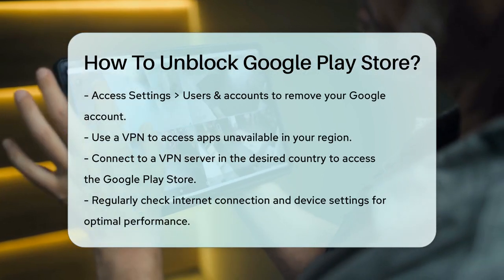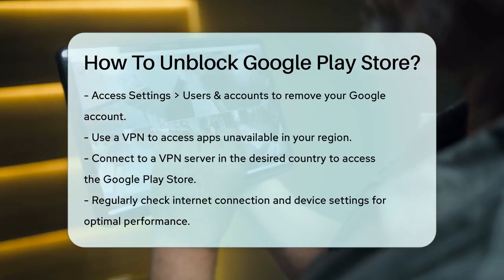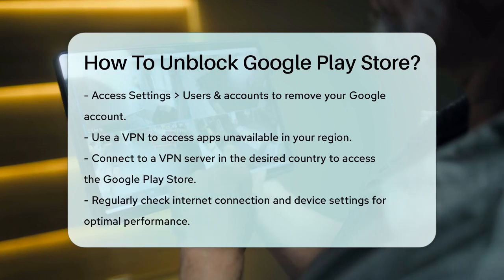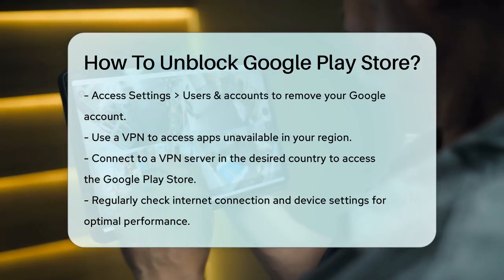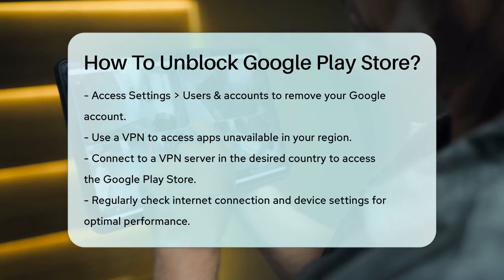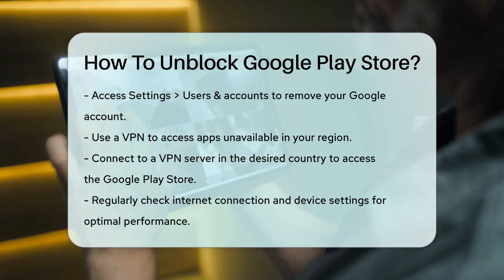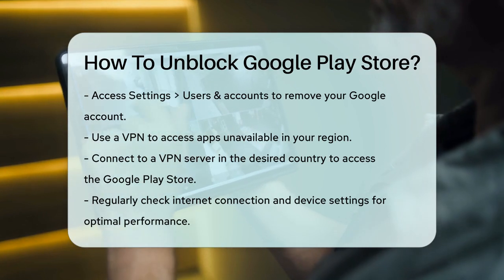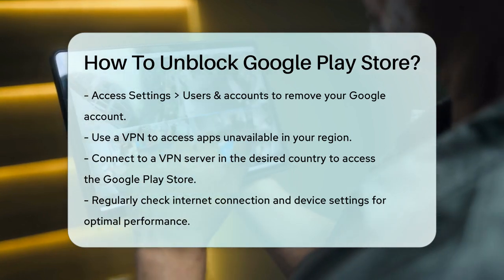Use a VPN. If you're in a region where certain apps are not available, using a VPN can help. Purchase a reliable Android VPN, connect to a server in the country where the app is available, and then access the Google Play Store. For example, if you want to access the US Google Play Store, connect to a VPN server in the USA.